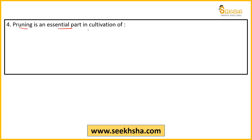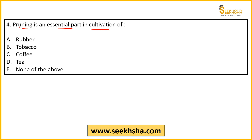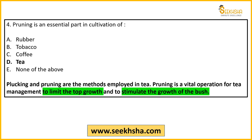Question four: Pruning is an essential part of cultivation of which crop? Various terms associated with different crops should be well known. The correct answer is option D — Tea. Pruning and plucking in tea involves cutting unwanted or excessive branches to restrict top growth. In a tea garden, we do not want the plants to grow too tall, so pruning limits top growth and stimulates the growth of the bush where tea leaves come from, avoiding wastage of nutrients.